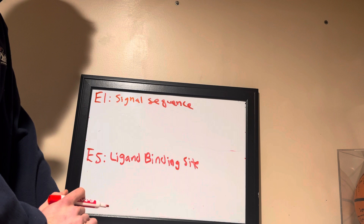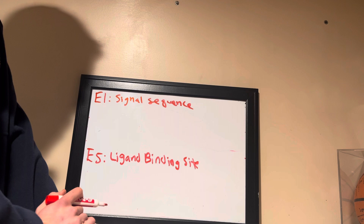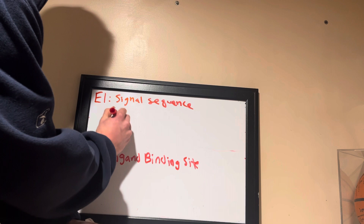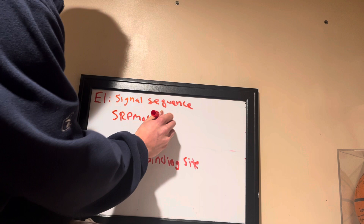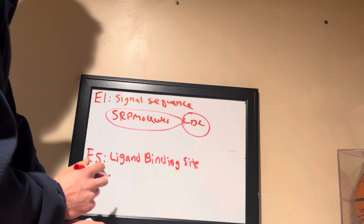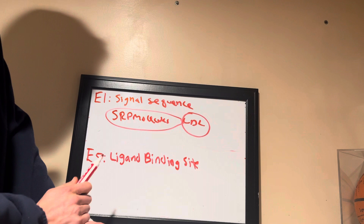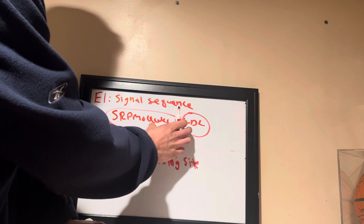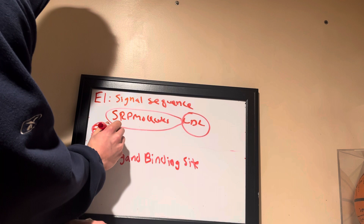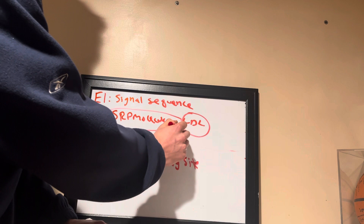If exon 1 is deleted, the LDL protein that is made can't make it to the endoplasmic reticulum, because the signal sequence is needed for SRP molecules to bind to the LDL protein being made. The SRP molecules recognize the signal sequence on the LDL protein, and as a result, the larger complex consisting of the LDL protein and SRP molecules is formed.